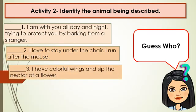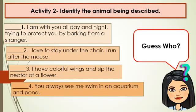Number 3: I have colorful wings and sip the nectar of a flower. Guess who? Number 4: You always see me swim in an aquarium and pond. Guess who?